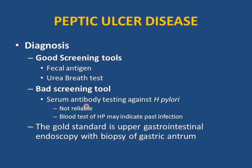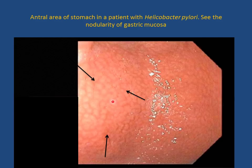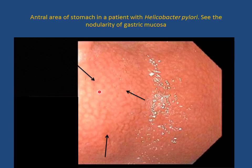The gold standard test for peptic ulcer disease is upper GI endoscopy with biopsy. Endoscopy reveals nodularity in the gastric mucosa, which is unique to H. pylori infection. This is the most specific and definitive diagnostic test.